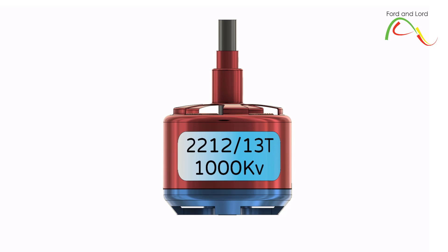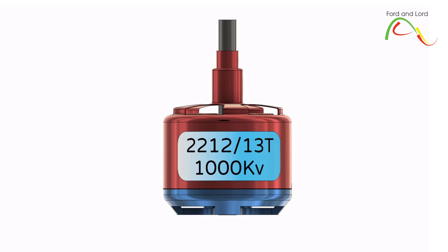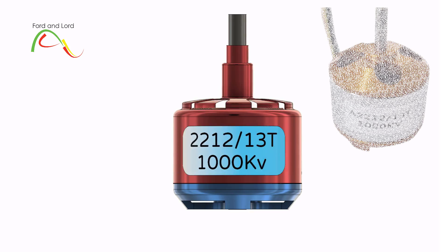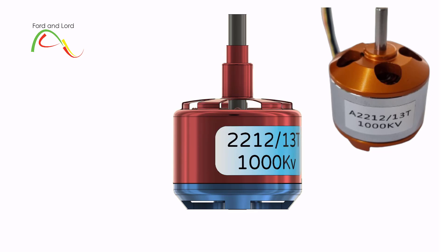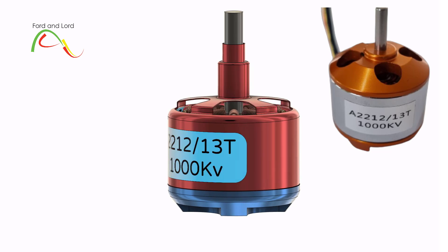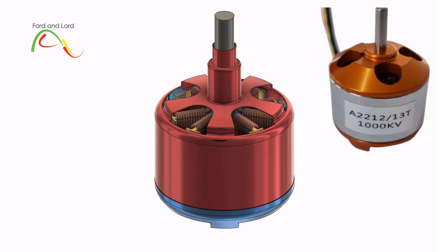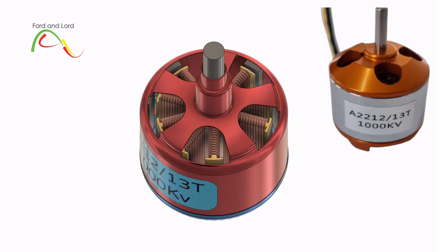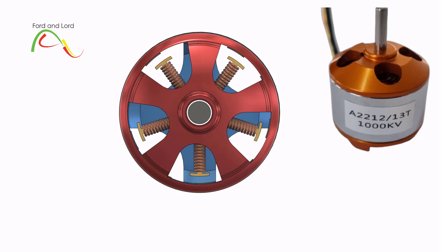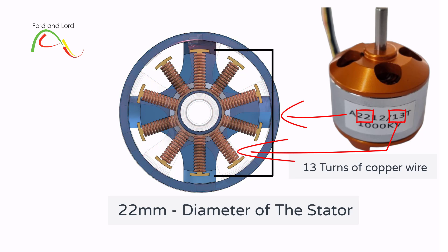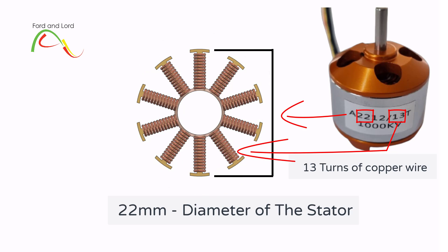Almost all brushless DC motors have stickers on them that provide some basic but important information. At a minimum, this information includes the width and height of the stator, as well as the KV rating. These parameters play an important role in performance. You can see four numbers on the stickers on the first line. The first two numbers represent the width of the stator, given in millimeters. In this particular case, the width of the stator is 22 millimeters.